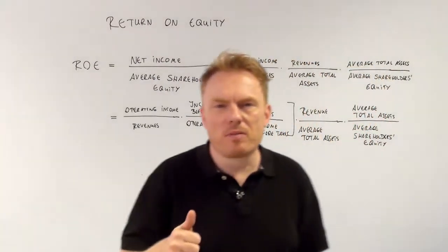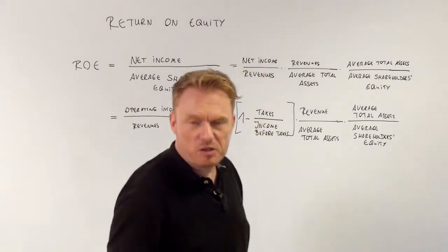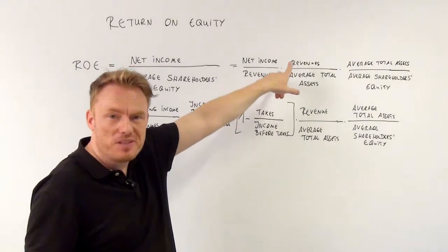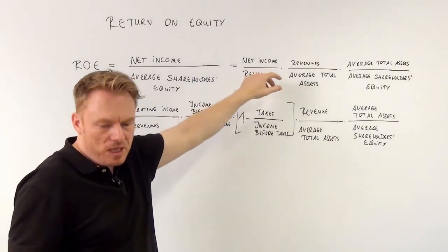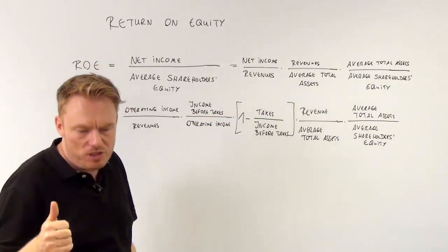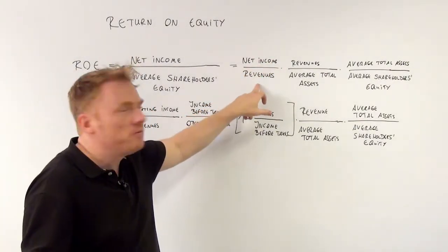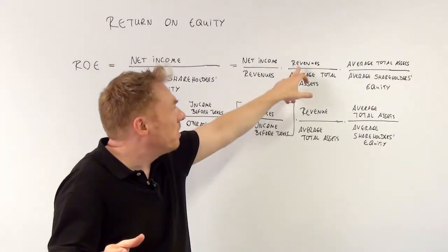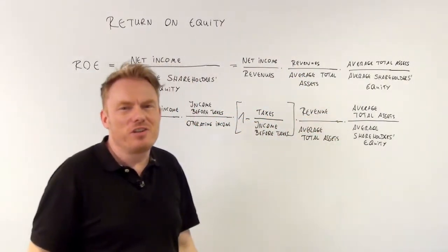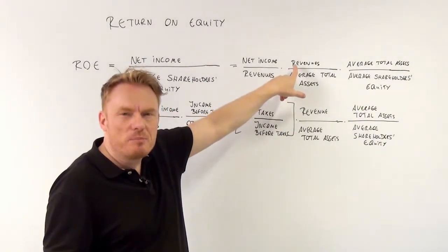There's a different one that's important and that uses expanding fractions. Because if you expand by revenues — if you multiply the numerator and denominator by revenues — you get: net income divided by revenues, multiplied by revenues divided by average total assets. This is just a way of expanding the original fraction.